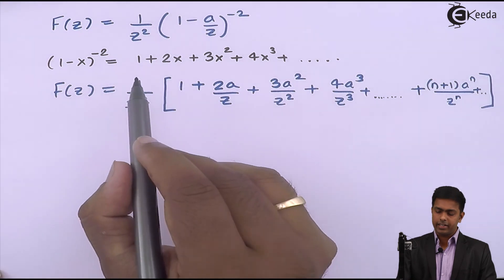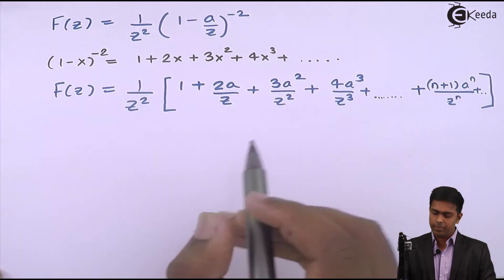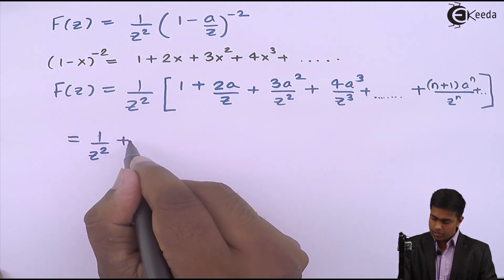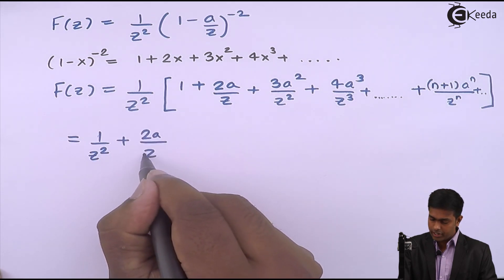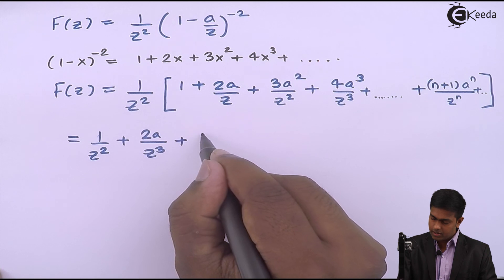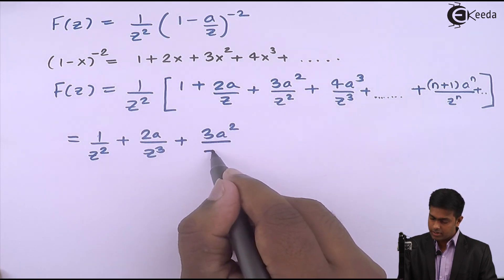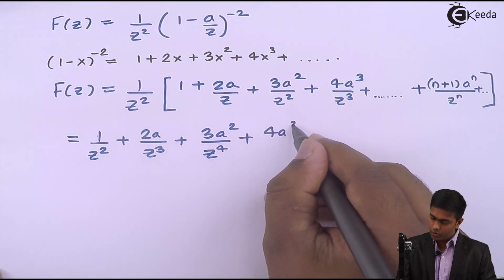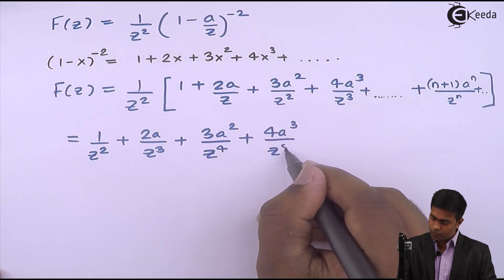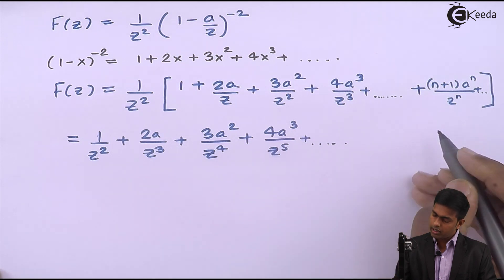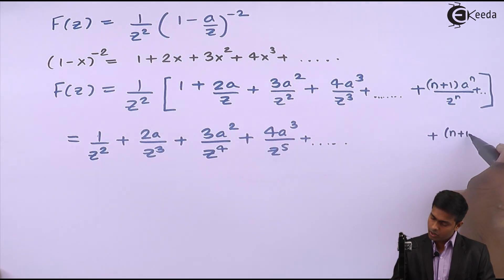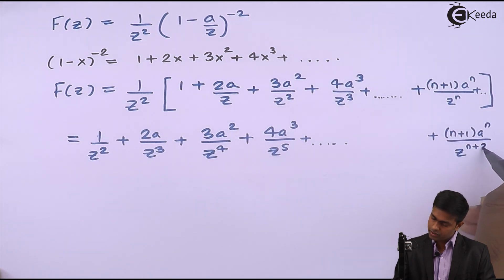Taking 1 upon Z square inside the bracket, we get: 1 by Z square plus 2A upon Z cube plus 3A square upon Z raised to 4, plus 4A cube upon Z raised to 5, and so on. And the general term is (N plus 1) A raised to N upon Z raised to N plus 2.